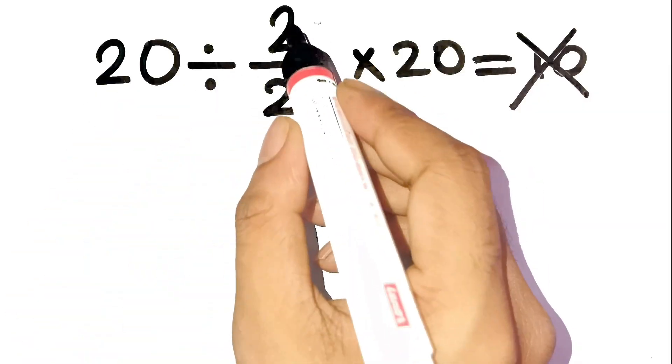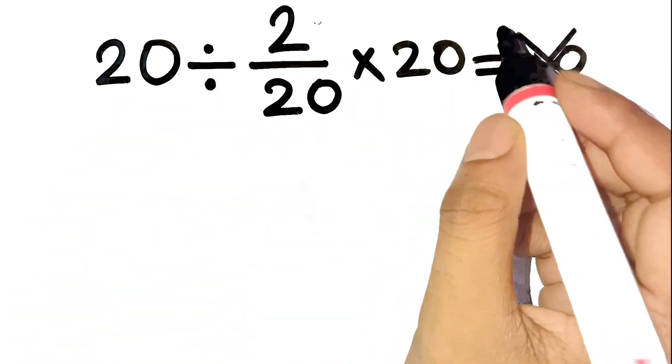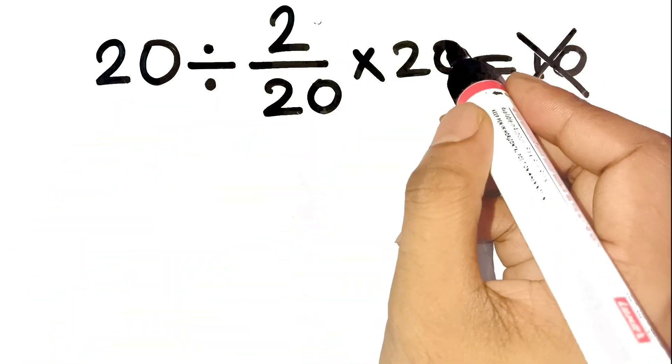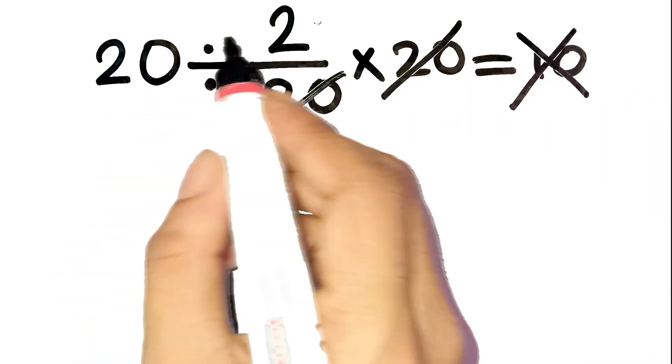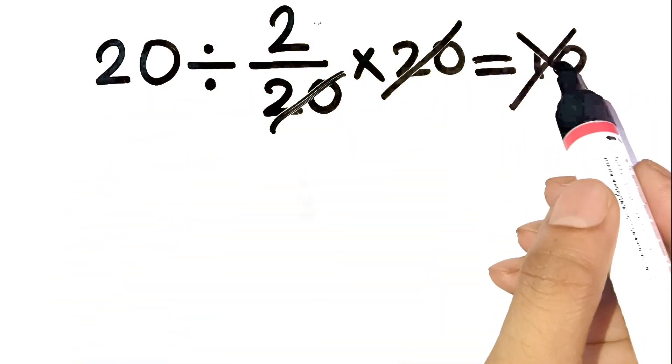I know what you're thinking. Okay, 20 divided by 2 over 20 times 20. Well, the 20s on the fraction and on the right must cancel, so it's just 20 divided by 2, which is 10, right?